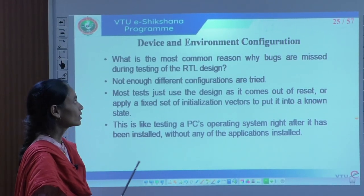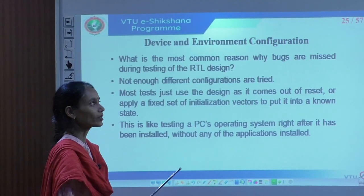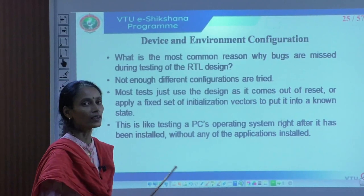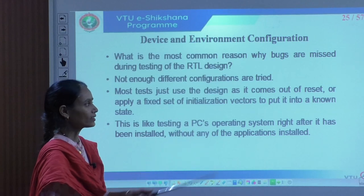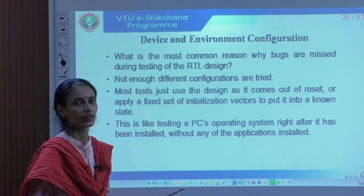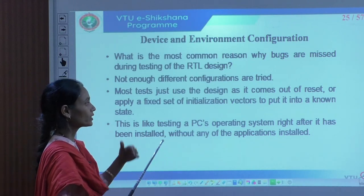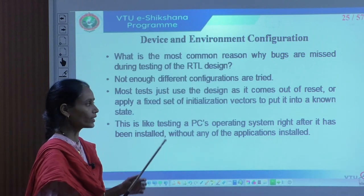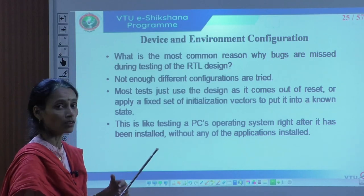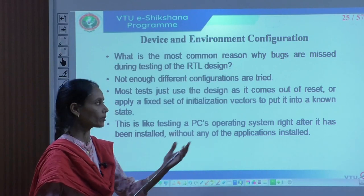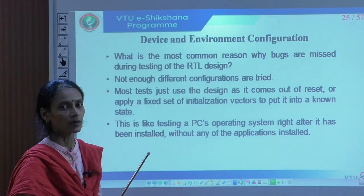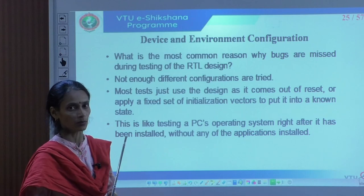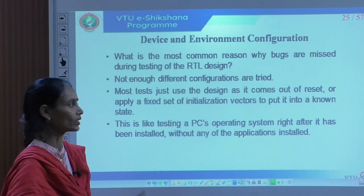Let us see one by one the first possibility of why bugs may occur in real time despite the verification plan. The bugs are missed out because not enough different configurations were tried. The verification plan might have taken into account certain initialization vectors or reset conditions, but in real-time application, there may be any environment or scenario which was not included during the verification process — that is why bugs may be missed out.